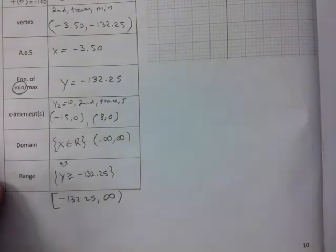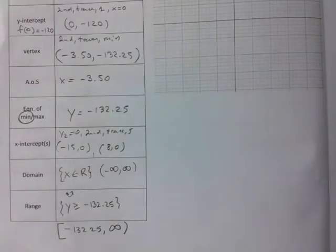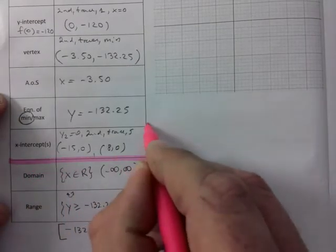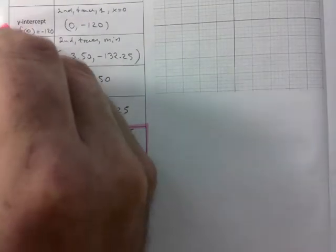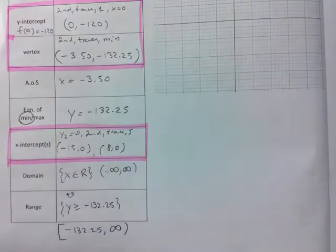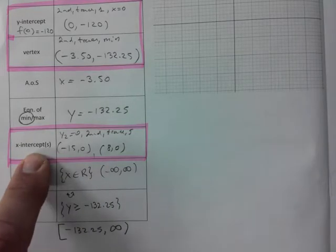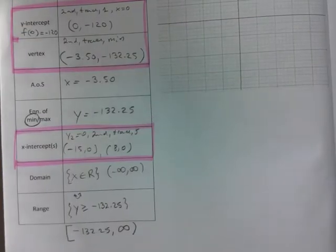And we have negative 132.25 to positive infinity, round bracket, square bracket. So this is just gathering information. The most important ones, if you ever graph, guys, okay, careful, it's these ones here. I want you to make sure you always find the intercept. So the x-intercept, the y-intercept, and the vertex. You need those points to make an accurate graph.